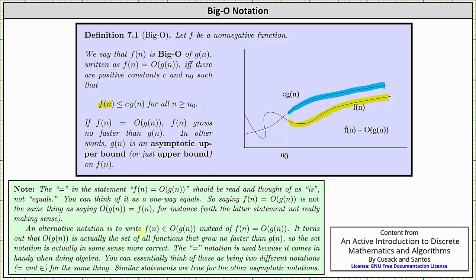An alternative notation is to write f(n) is an element of Big-O of g(n), instead of f(n) is Big-O of g(n). It turns out that Big-O of g(n) is actually the set of all functions that grow no faster than g(n). So the set notation is actually in some sense more accurate. The equals notation is used because it comes in handy when doing algebra. You can essentially think of these as being two different notations for the same thing.